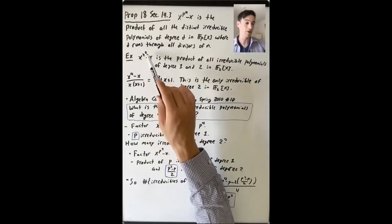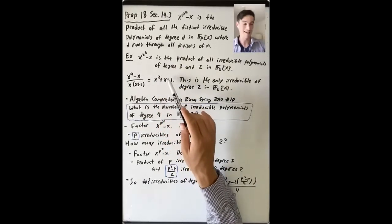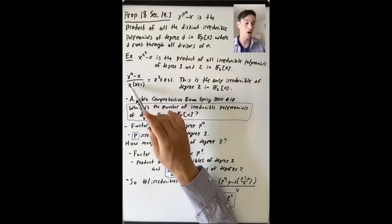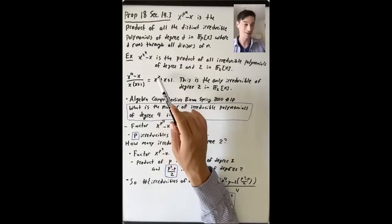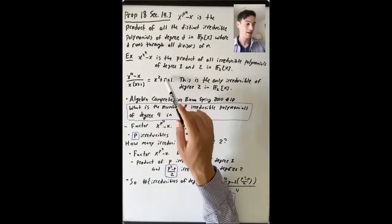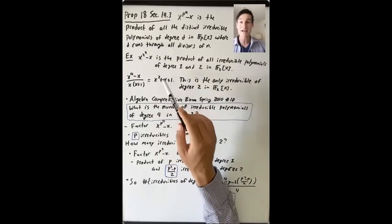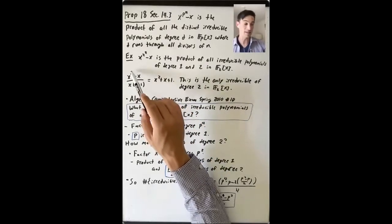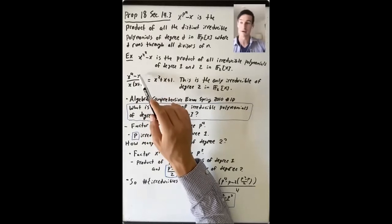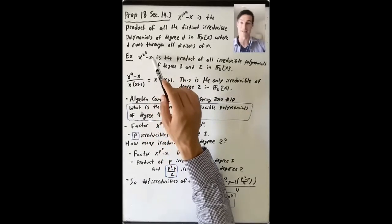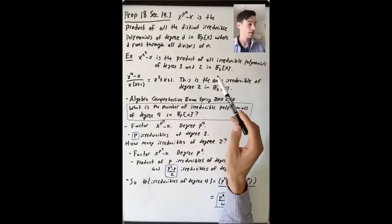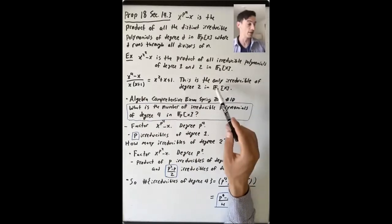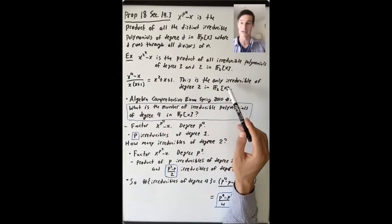That tells you automatically that x squared plus x plus 1 is irreducible of degree 2, and that there are no others. Because every irreducible of degree 2 divides x to the 4th minus x, this is the only irreducible of degree 2 in F_2[x].